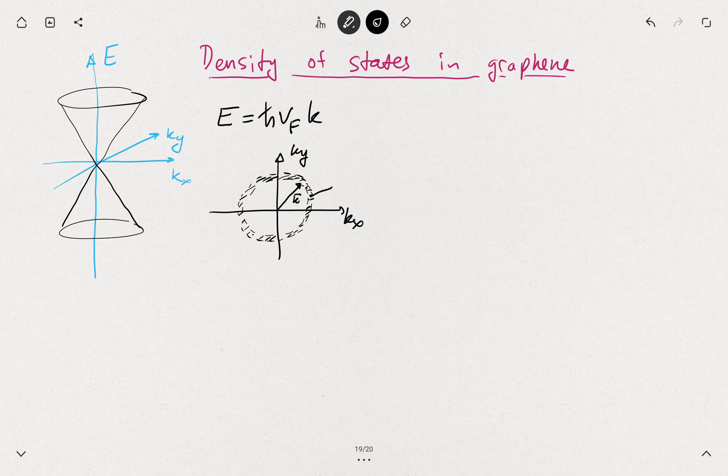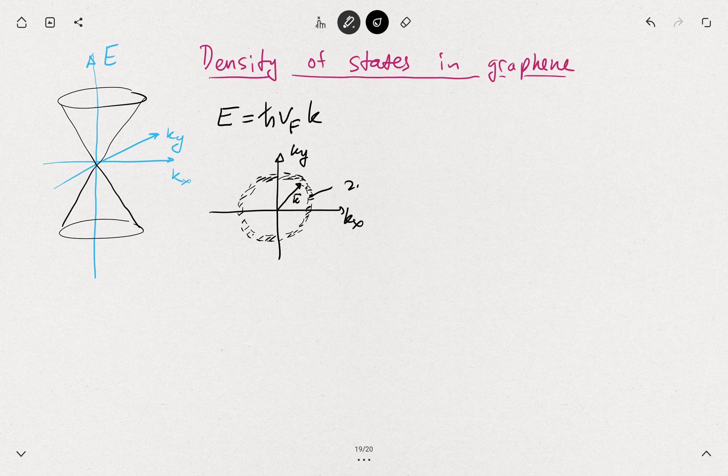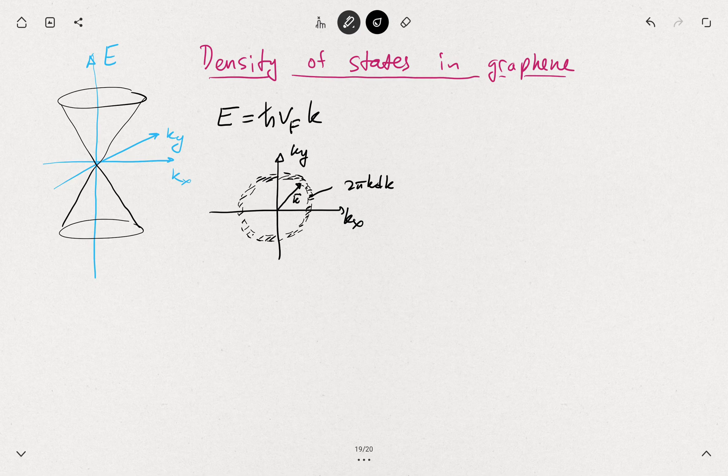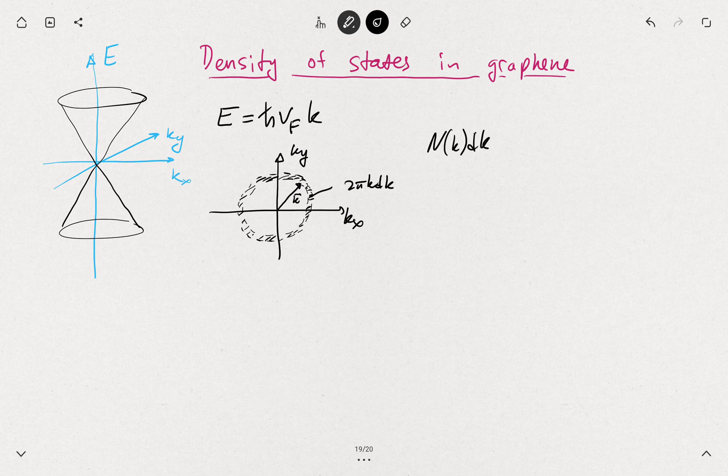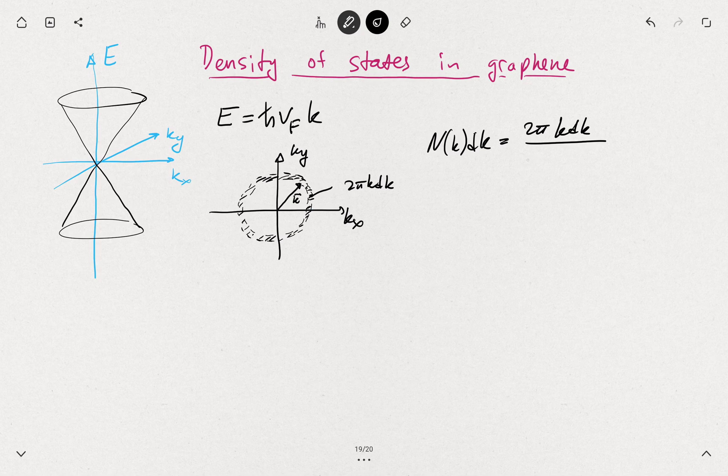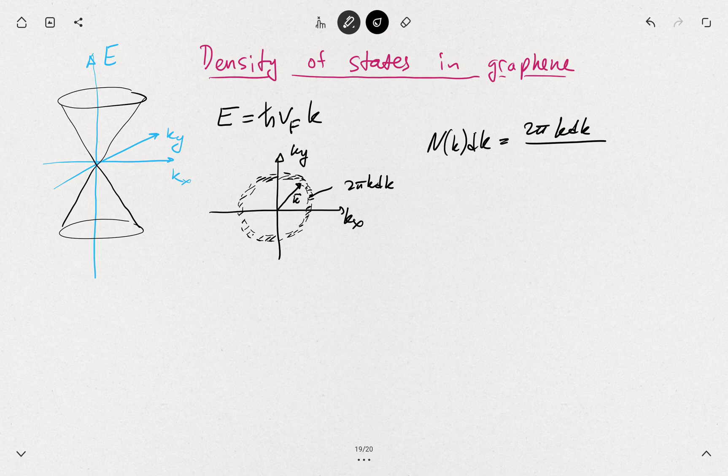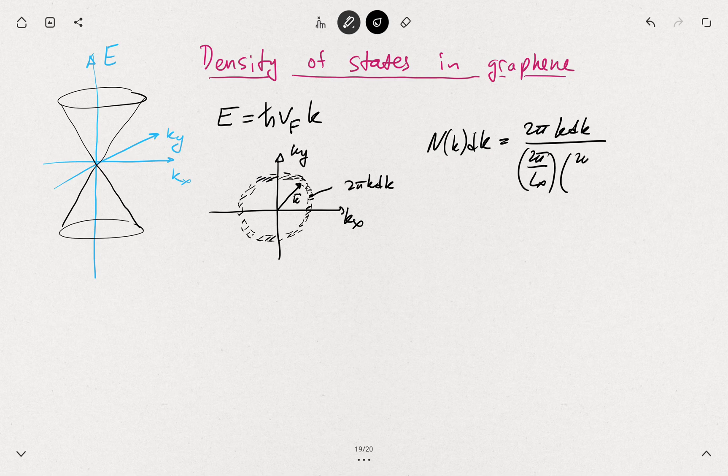The states here in the shaded region would be 2π k dk, and then the total number of states N of k dk would be 2π k dk divided by the separation between those states. The separation depends on the size of the sample, and for the two-dimensional case we have one of the states quantized, and the x and y are macroscopic components. We divide by 2π over lx times 2π over ly.